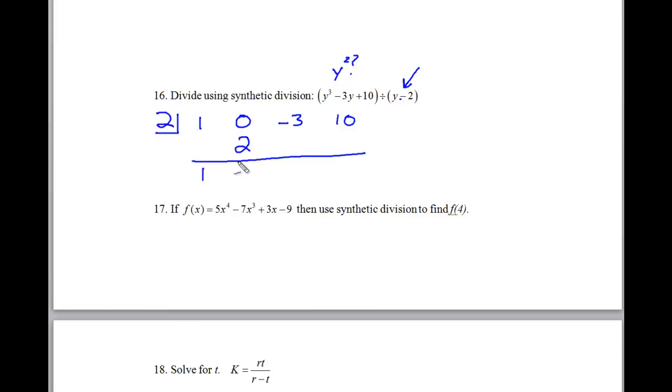2 times 1 is 2. Then we drop these two. 0 and 2 make 2. 2 times 2 is 4. Add these together here. This makes a positive 1. 2 times 1 is 2.